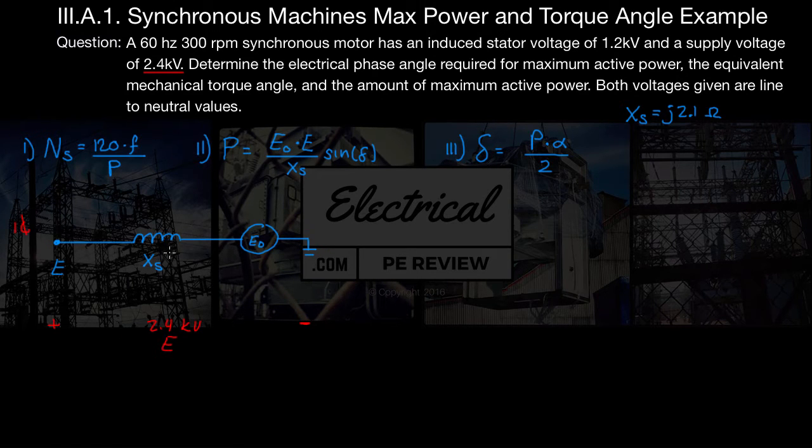Next, our synchronous reactance that we just made up for the sake of this problem. We said that was going to be J 2.1 ohms. And the induced stator voltage that the problem was also nice enough to give us in the line to neutral value of 1.2 kV. So this value right here is going to be plus 1.2 kV. Does this look right to everybody? This would also be our E_x, which of course we're not using for this problem, but I'm just going to show it there anyways. This looks good to me. Let's begin.